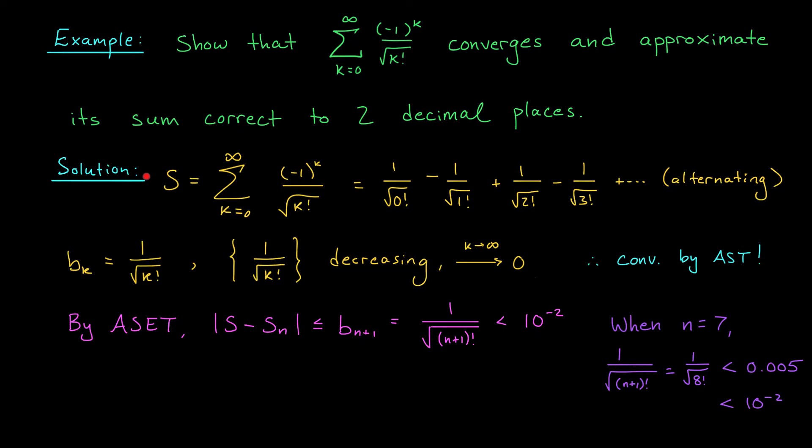Okay, we have a game plan. We're going to estimate the total sum s using the partial sum s7. We find that s7 is 1 over the square root of 0 factorial, minus 1 over the square root of 1 factorial, and so on, all the way up to minus 1 over the square root of 7 factorial. If you pass this off to your calculator, you should get a value approximately equal to 0.43488. Okay, now here's the big question. Is our approximation actually correct in the first two decimal places?